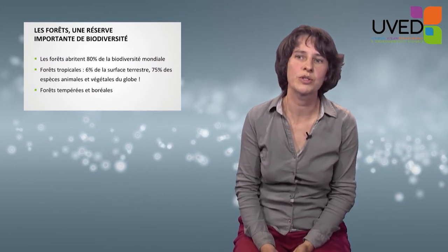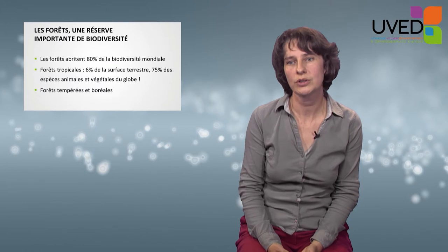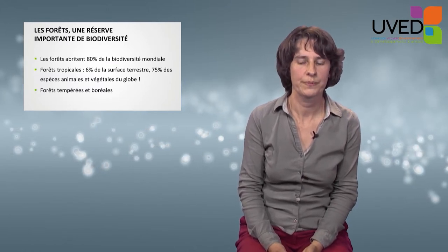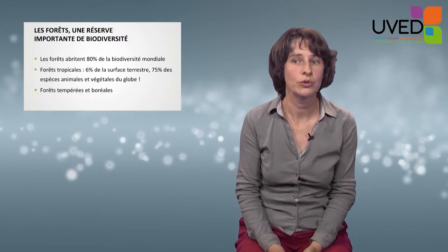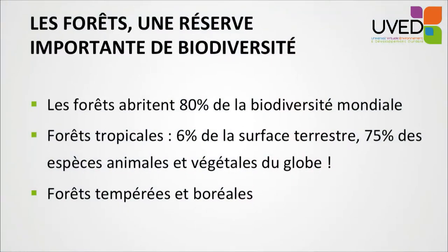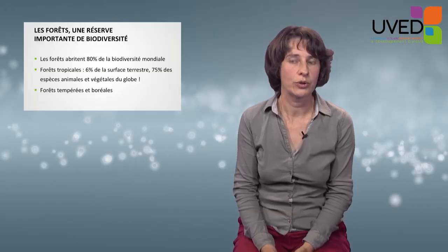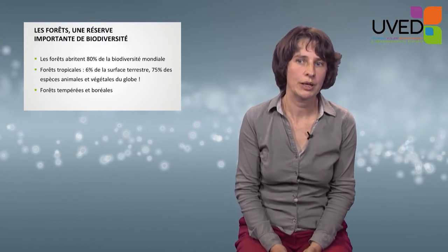Now that we have looked at biodiversity in terms of quality, we're also going to look at it in terms of quantity. The first figure that comes to mind is 80%: forests harbor 80% of the world's biodiversity. Tropical forests are very rich — although they only cover 6% of the planet, they are a refuge for 75% of animal and vegetal species across the world. Temperate and boreal forests found in Europe are not as rich, but they make an important contribution to biodiversity.